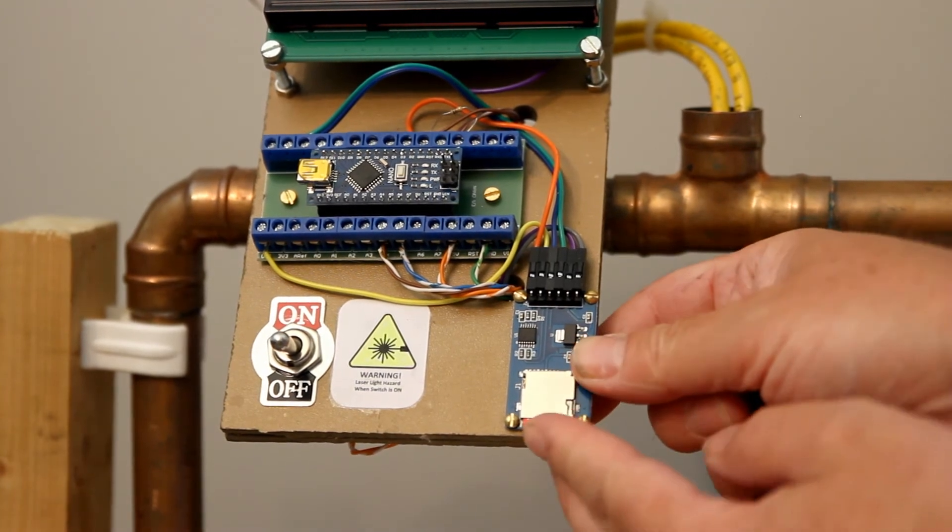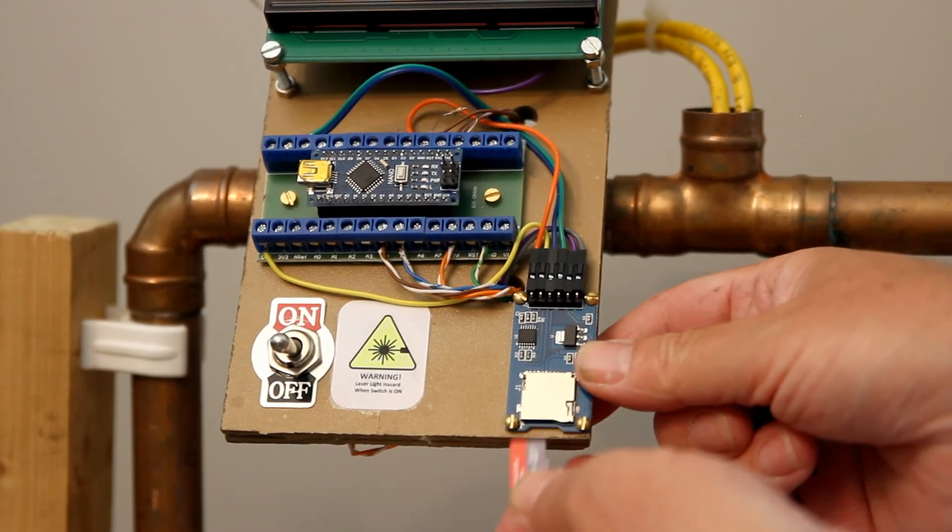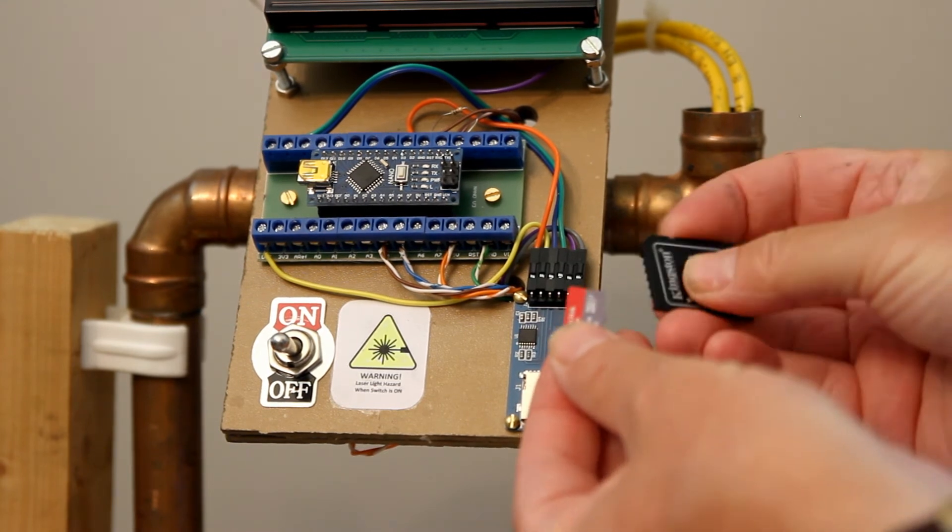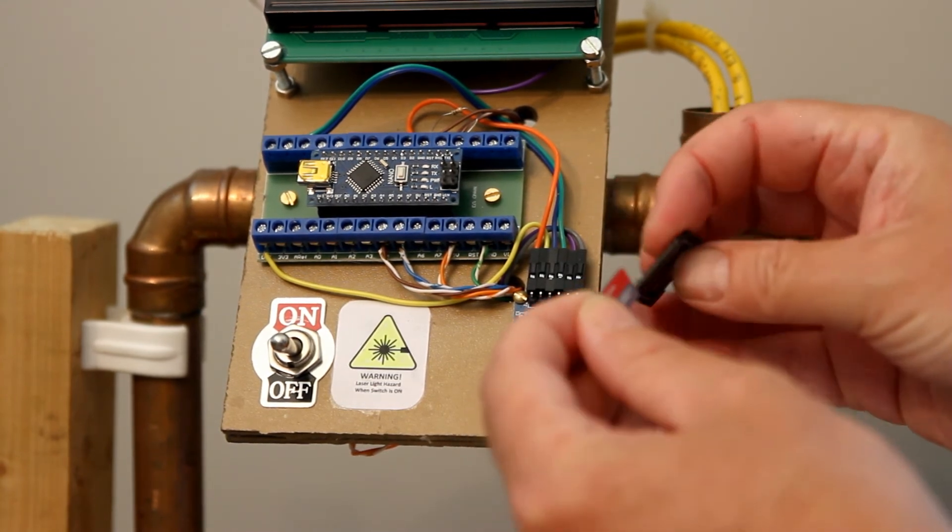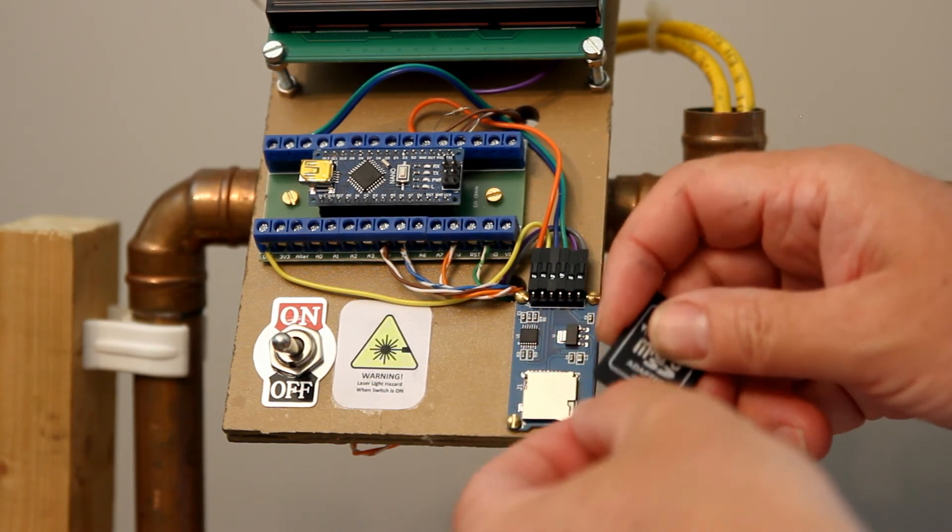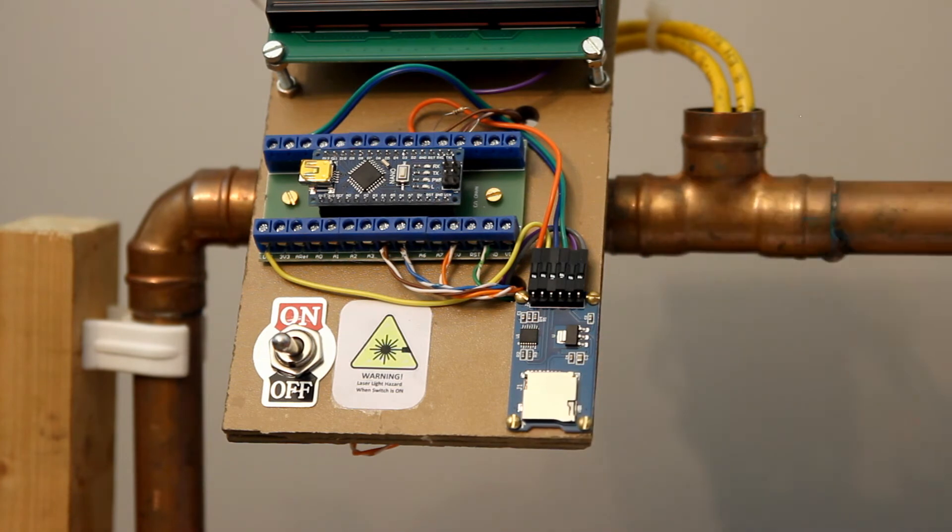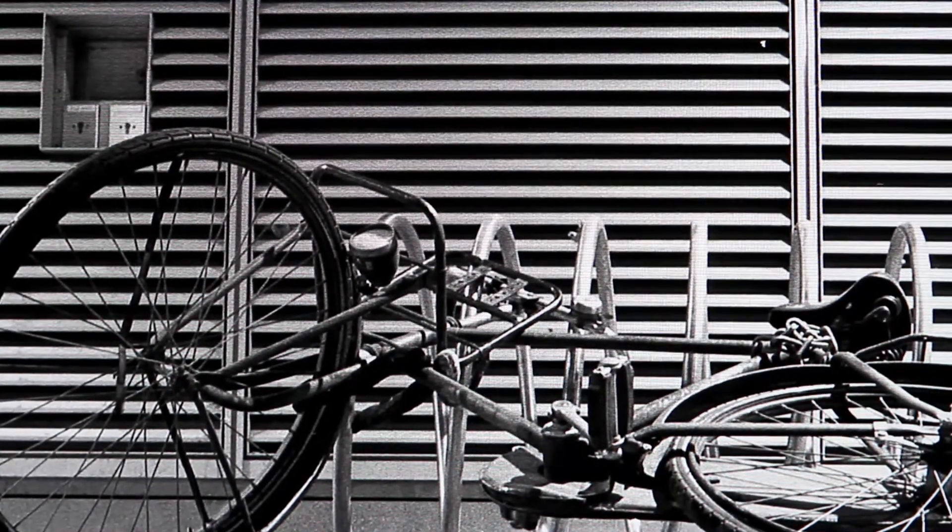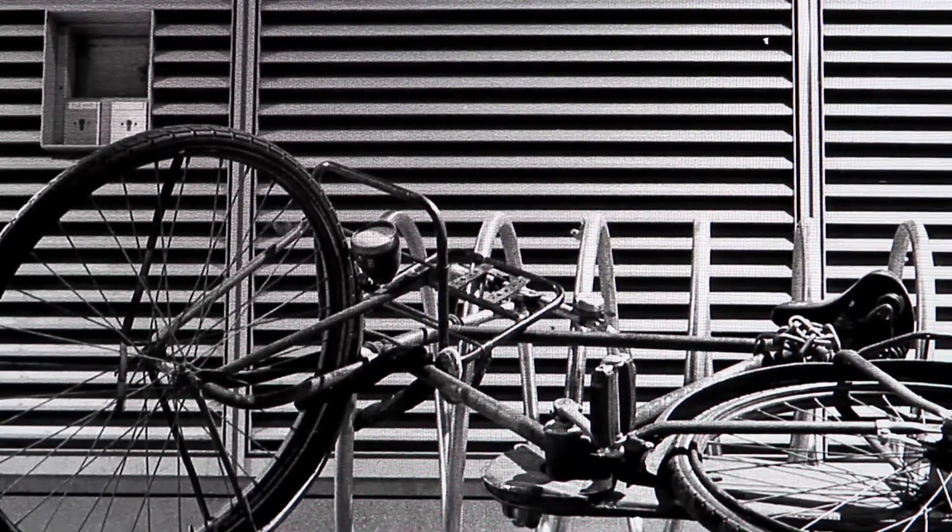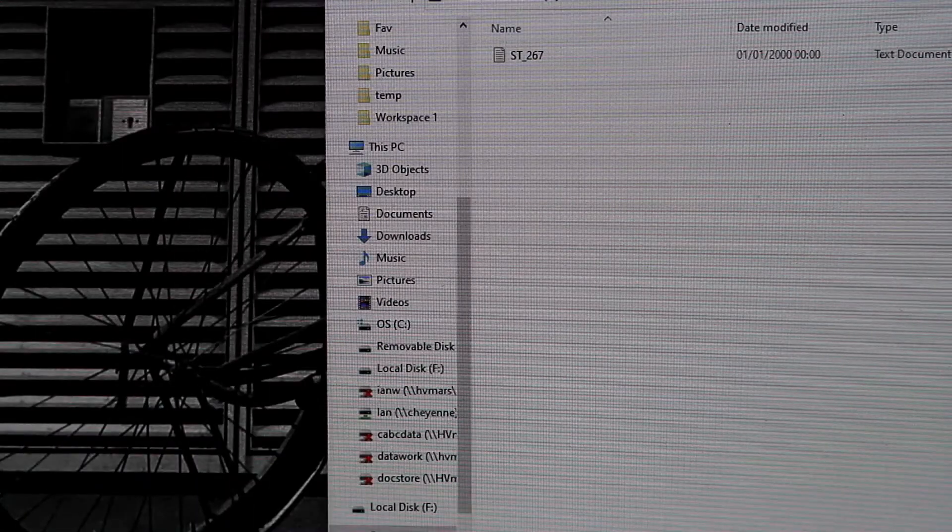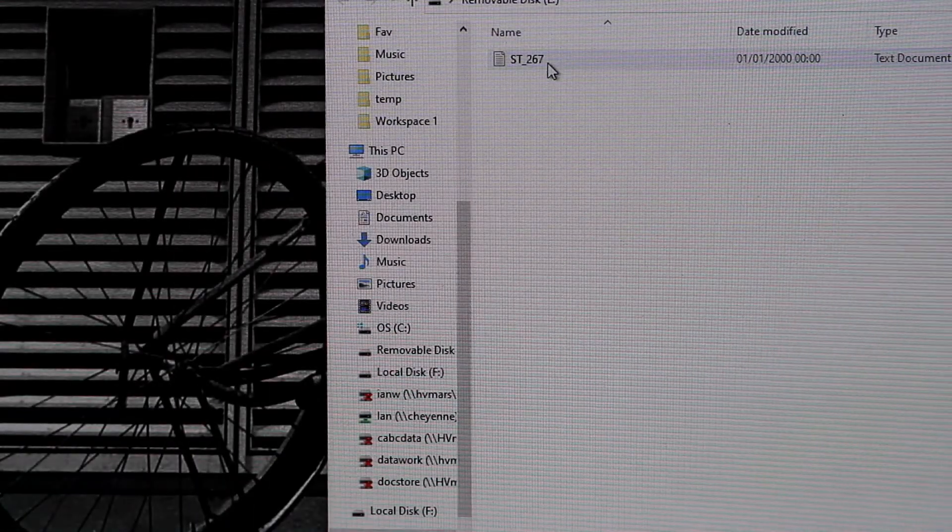So I'm just going to remove the data card from the data logger. You can see it's just a little micro SD card there. And I'm going to put it into this holder so that it can be put into my computer. Okay so I'm just going to push the card in. The card's now in the computer and here the file explorer has opened.